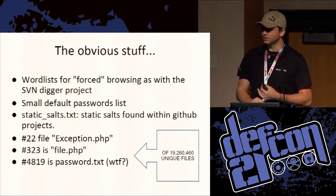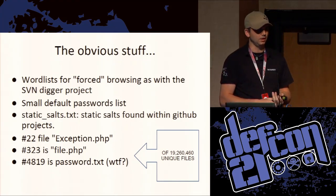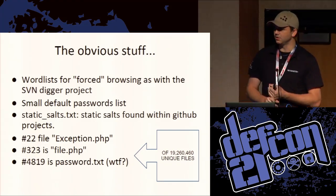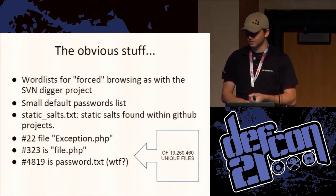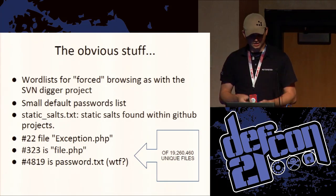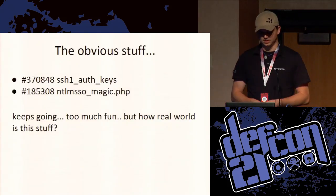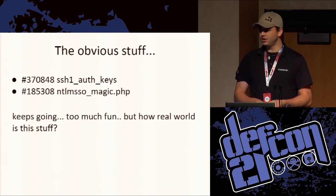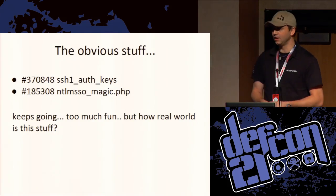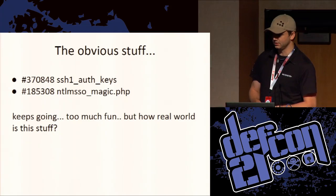Number 22 on the list of files is exception.php. I have never ever looked for that when looking at a web application, even a PHP one. But after Wick shared the list, I used it, got code execution because exception.php was actually loading the exception information from a file and you could just specify any file you want — so it's all on my list now. SSH one-off keys we found — pretty awesome. And this is one of my favorites: NTLM SSO magic. Anyone know what NTLM SSO magic.php does? It has your username and password statically assigned in it so it does NTLM.